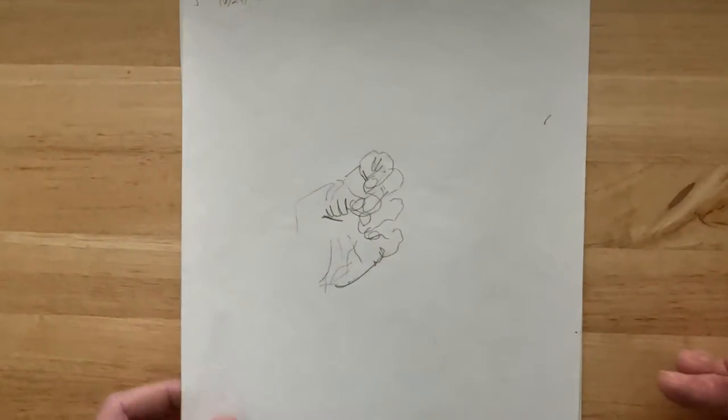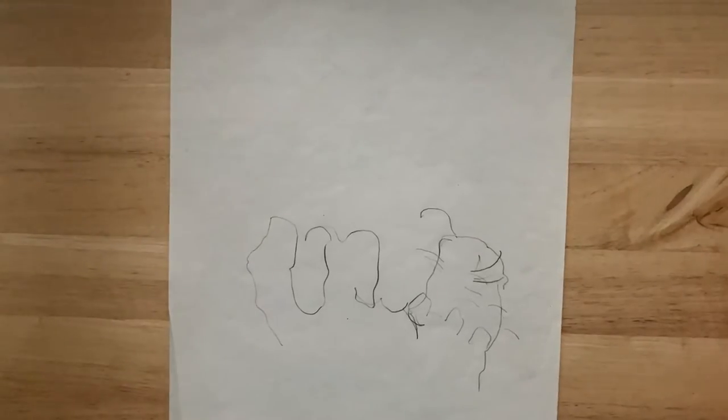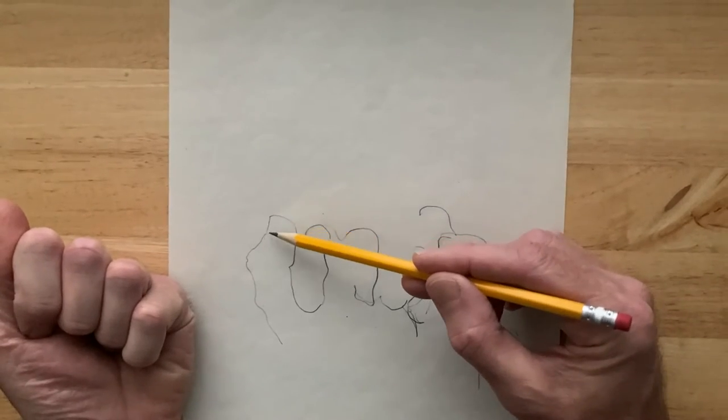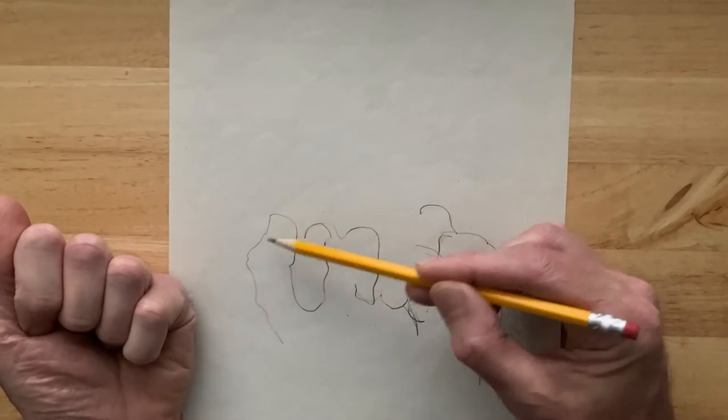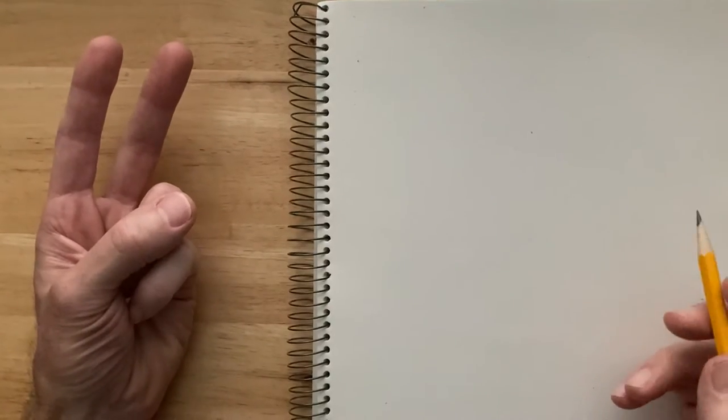When you do make them larger, that way you can get all those little details much more easily. This is one that I did of my fist and you can see that I've got all the little wrinkles here in my thumb, the thumbnail, my finger.